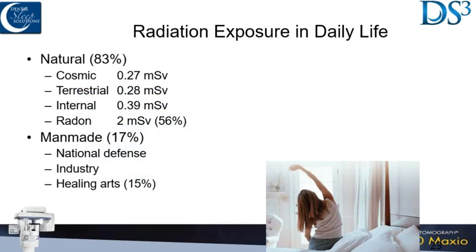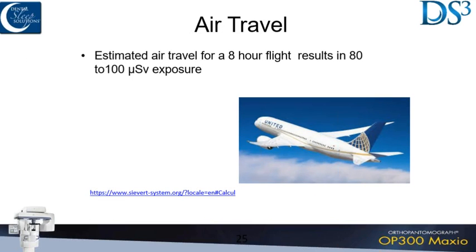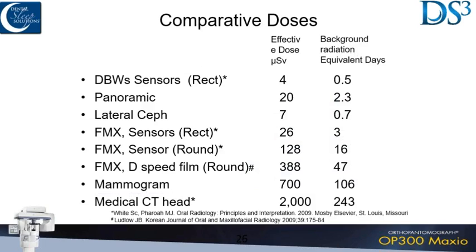The vast majority of radiation any of us get is natural — 83% versus 17%. I fly a lot — Rich, you should think about it; we lecture all over the country. I didn't know what a microsievert was until about a year ago. Eight microsieverts is what you get just from sitting in your house, walking around on earth each day. If you fly, you get 80 to 100 — an eight-hour flight can give you that amount. You can go to that website on the page and enter where you're going; it'll calculate your exposure.